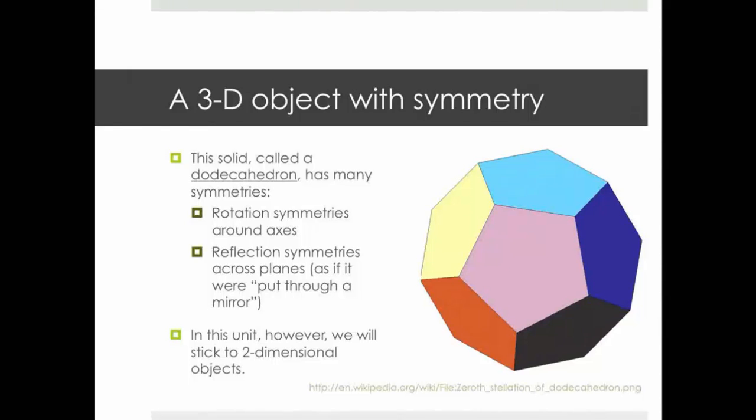It's also possible to have three-dimensional objects that have symmetry. Here is a three-dimensional object called a dodecahedron. And it has many symmetries. For example, there are axes that go through opposite faces. Take, for example, the light blue one on the top. There's an opposite face, which is hidden. But you can take a line that goes through the center of those two faces. And then you can rotate the entire dodecahedron. But not a full 360. In fact, again, just 72 degrees. And when you're done, the dodecahedron will look exactly the same, except perhaps for the way the faces are colored.